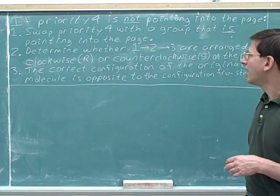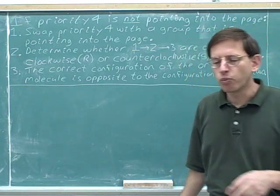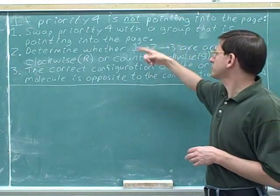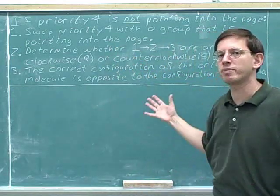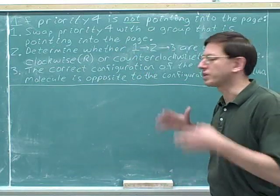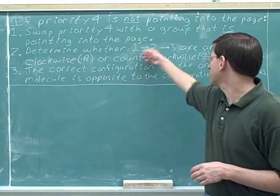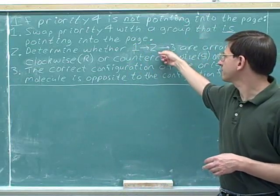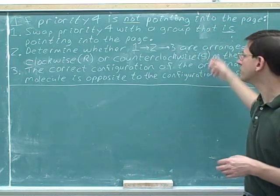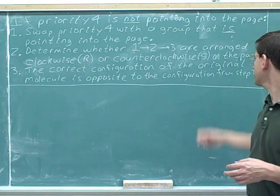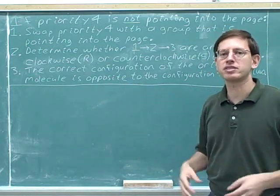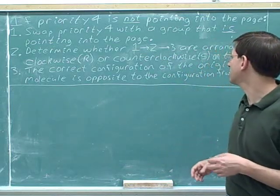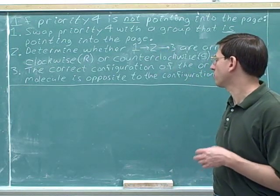This method should make some sense to you. Remember that in the official method for determining R and S, we are supposed to rotate the molecule until the number four priority is pointing away from us. So it makes sense that if the number four priority is not pointing away from us, step one should be to swap the number four so that it is pointing into the page — to match up with the official method. Then we determine whether groups one to two to three are arranged clockwise or counterclockwise on the page. But since you made a swap in that first step, the answer from step two was not the configuration of the original molecule — it's the configuration after you make a swap.